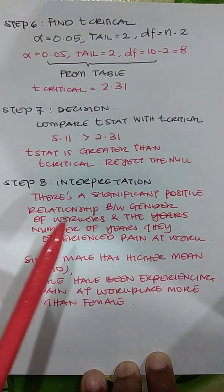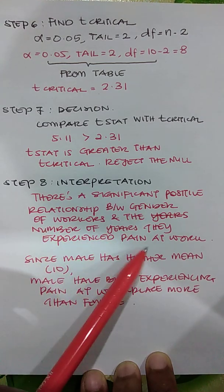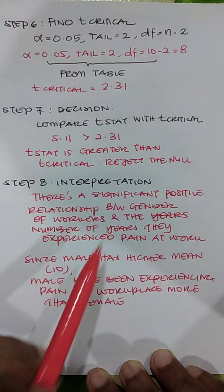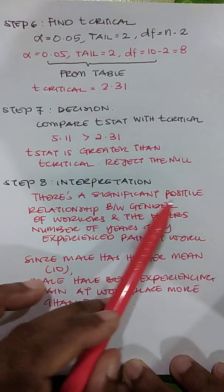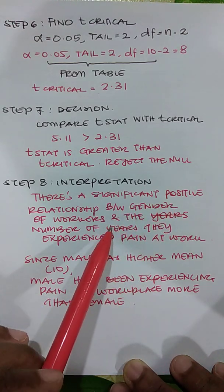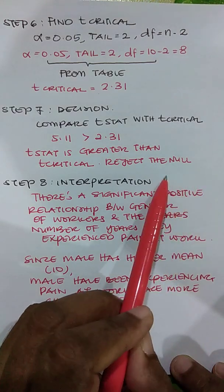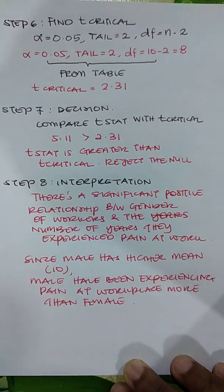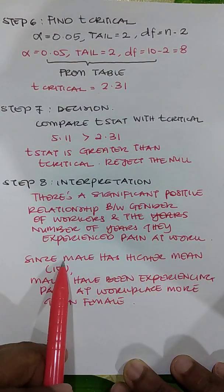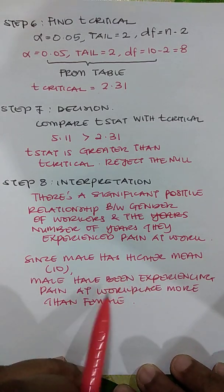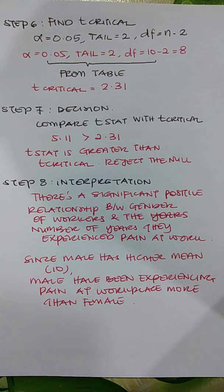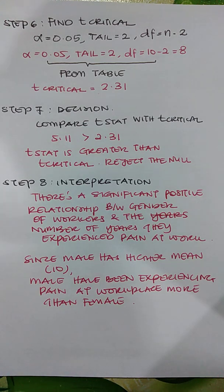Rejecting the null means there is a significant positive relationship between the gender of workers and the number of years they experience pain at work. It is positive because our correlation coefficient was 0.87, with no negative sign. Since males had a higher mean, males have been experiencing pain more at the workplace compared to females. So gender is associated with years of pain experience, and males show higher pain experiences than females.